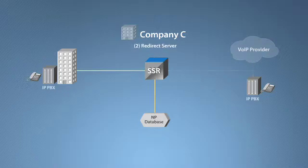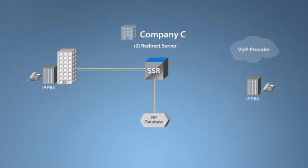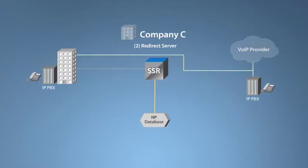As a redirect server, the SSR receives a request from an originating user agent. The SSR performs the NP function to determine the endpoint destination. It then sends a SIP redirect message to the user agent that instructs the user agent to forward the request to the appropriate destination.